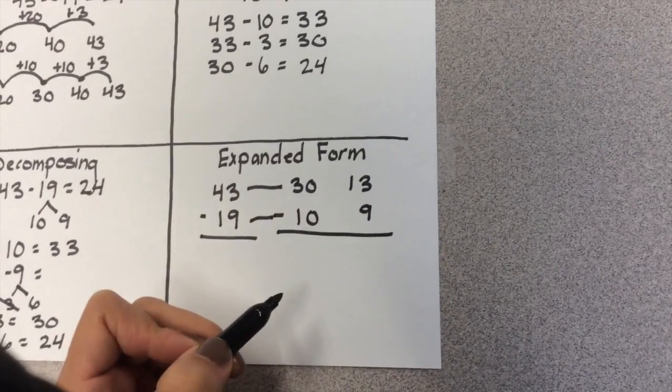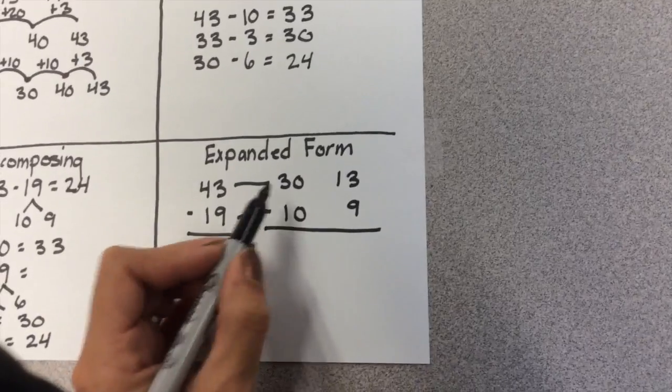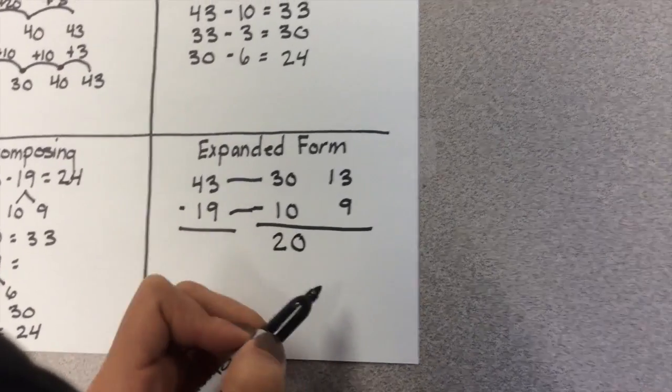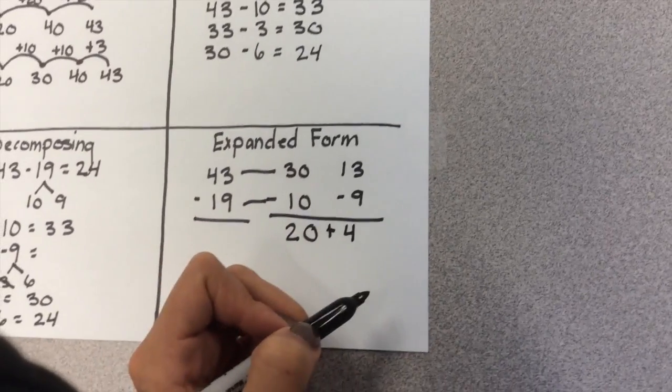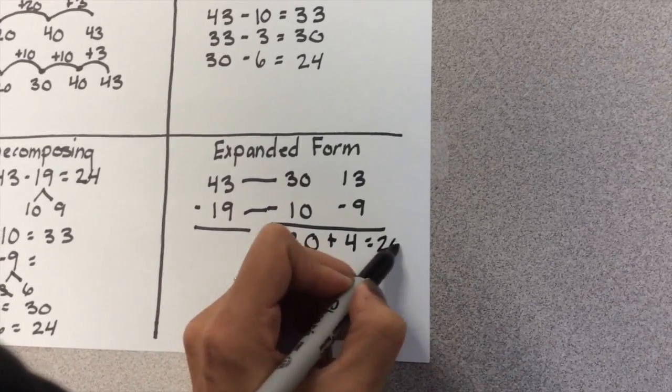And now they just get to subtract straight down. So they're going to subtract their 10s. And then they're going to subtract 13 minus 9 and get 4. And then they put their 10s and 1s together, and they get 24.